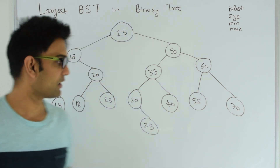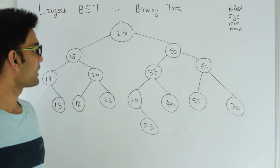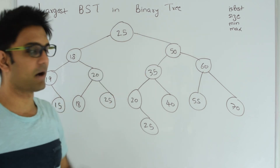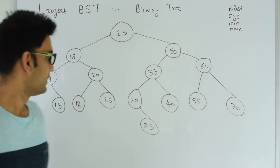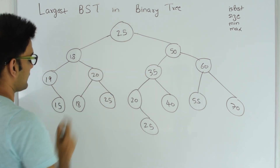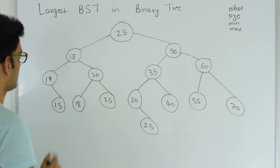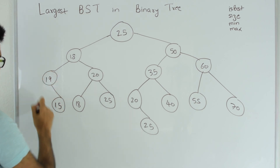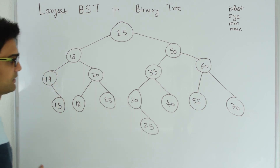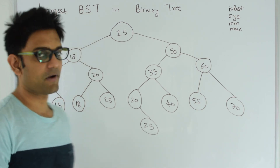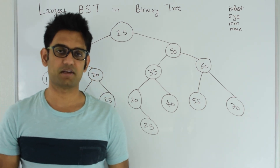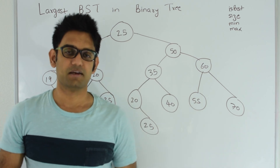So here we are looking for the largest binary search tree in a binary tree. For example, here this is a binary search tree and its size is 3, while this here is not a binary search tree. So we have to find the largest binary search tree in this tree.